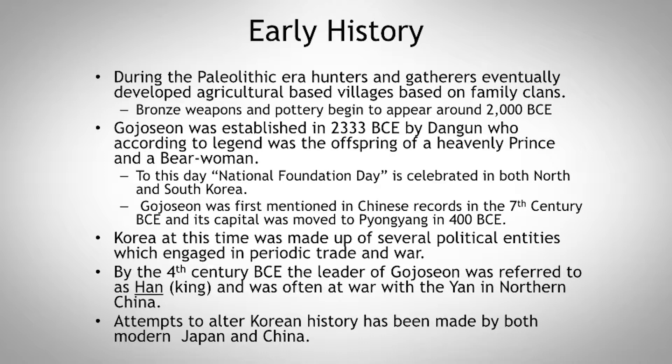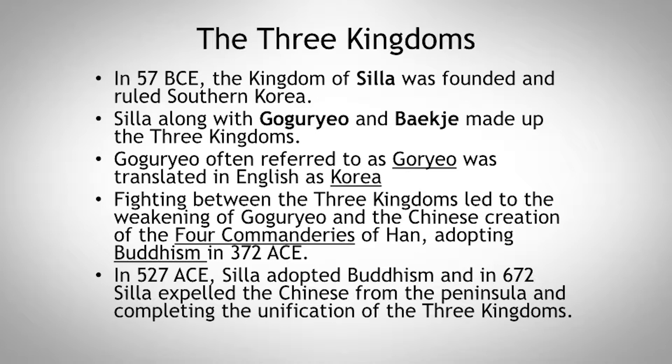Gojoseon was first mentioned in Chinese records in the 7th century BC, and its capital was moved to Pyongyang around 400 BC. Korea at this time was made up of several political entities or little kingdoms which engaged in trade and war. By the 4th century BC, the leader of Gojoseon was referred to as the Han, or the King, and was often at war with the Yan — the tribal groups in northern China. Attempts to alter Korean history were made by both modern Japan and modern China; they've tried to rewrite Korean history, minimizing the Koreans' role in their own history, which has really upset the Koreans.